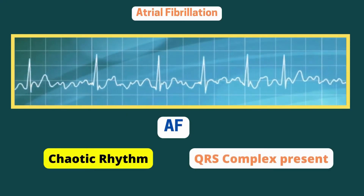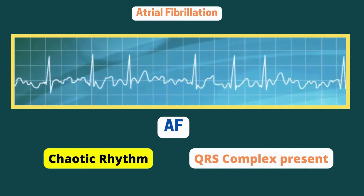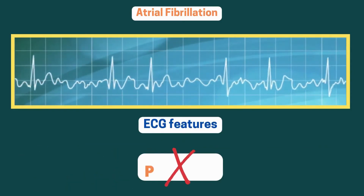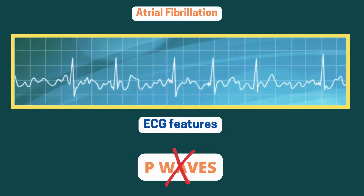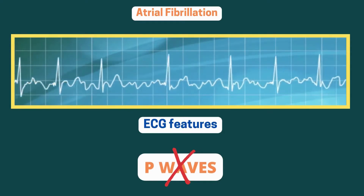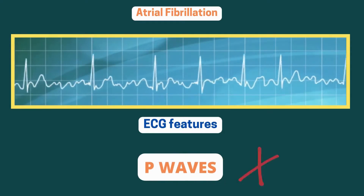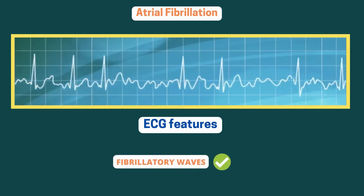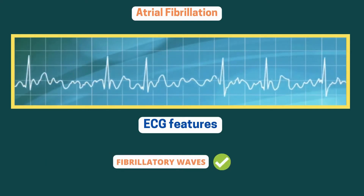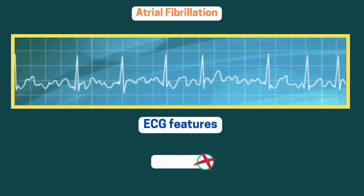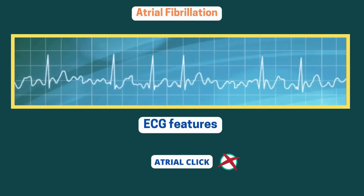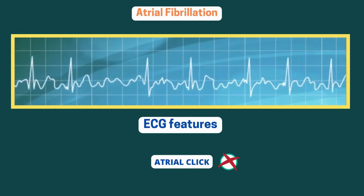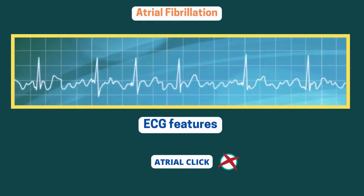Atrial fibrillation is a chaotic rhythm with recognizable QRS complexes. The chaotic rhythm pattern and the absence of P waves are the hallmarks of this dysrhythmia. The chaotic baseline known as fibrillatory waves is quickly seen. Note that atrial kick is lost and the risk of thrombus formation is particularly significant after 48 hours.